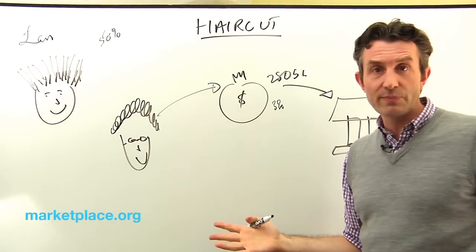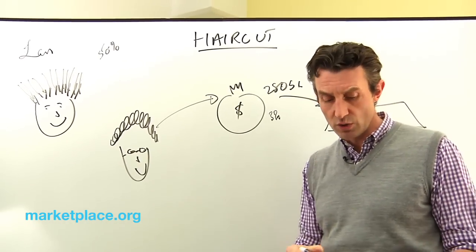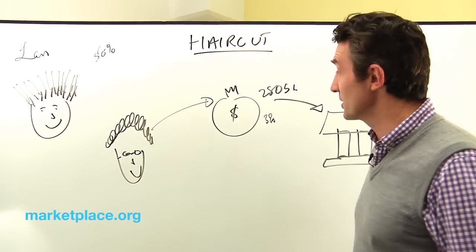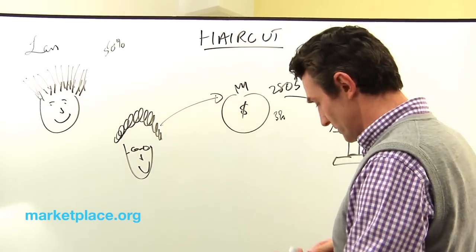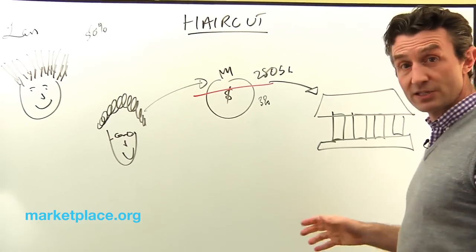So Greece has said, look, we can't afford to pay this back. We can't afford to make these interest payments. It's a nightmare for us. What are we going to do? We'd like you guys to take a haircut. And what this essentially means is like Lars, they're basically getting the chop.